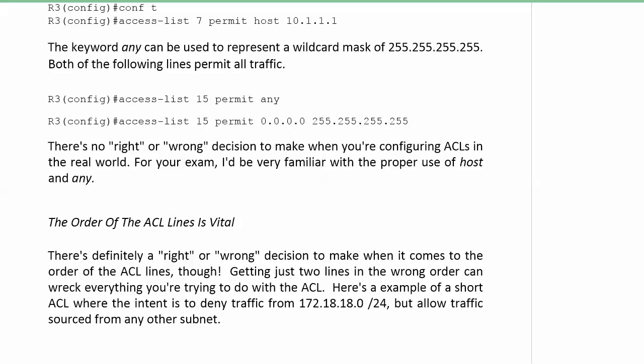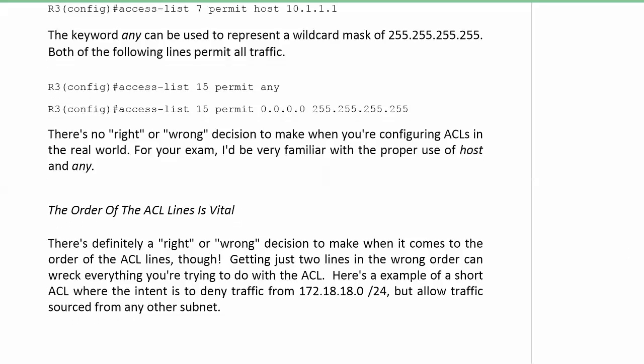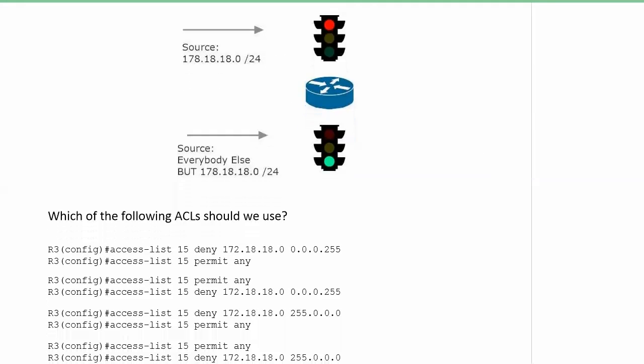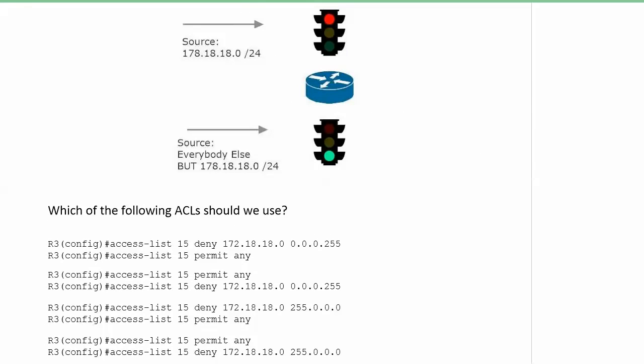Now let's talk about the order of the ACL lines. I've mentioned that importance once or twice, but now we're going to dig into it with an exercise. While there's no right or wrong decision with the words host and any versus their respective wildcard masks, there is a huge decision to make when it comes to the order of the ACL lines. There is no gray area here - it's either right or it's wrong. Getting just two lines in the wrong order can wreck everything you're trying to do, especially with shorter ACLs. Here's an example where the intent is to deny traffic sourced from 172.18.18.0/24 but allow traffic sourced from any other subnet. Which of these four ACLs should we use?